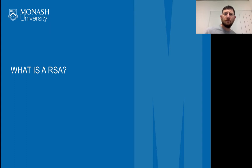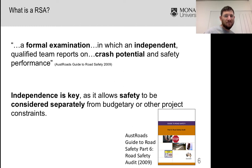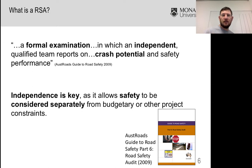So first of all, what is a road safety audit? Well, there's the Austroads guide which has the formal definition: a formal examination in which an independent team reports on the crash potential and safety performance of something on the road. The key things there are that it's a formal examination and that it's an independent team.